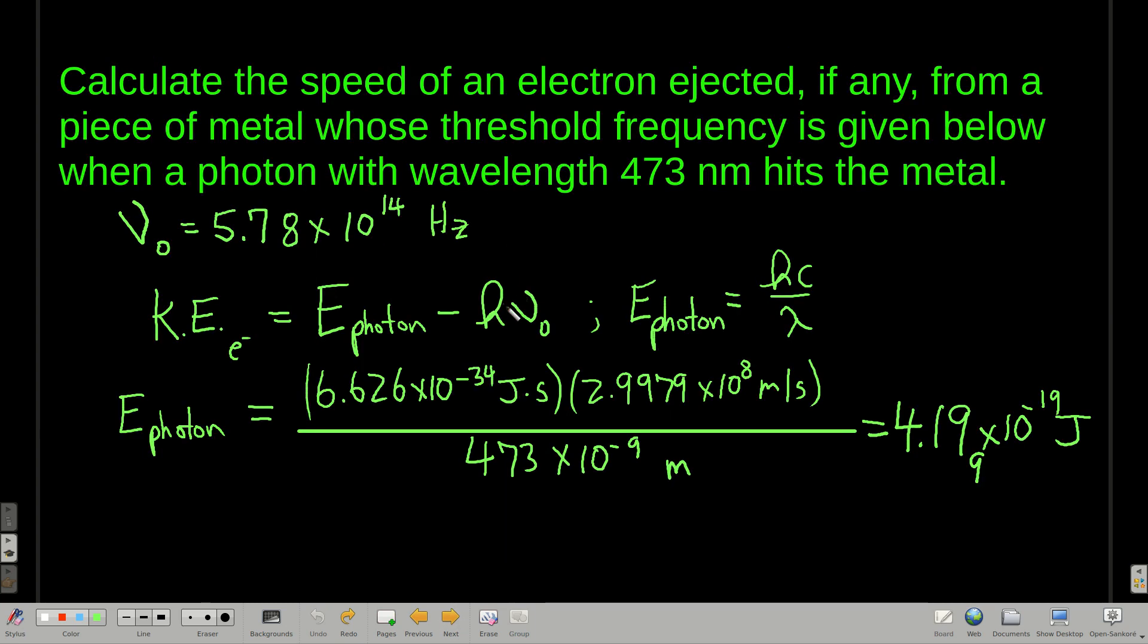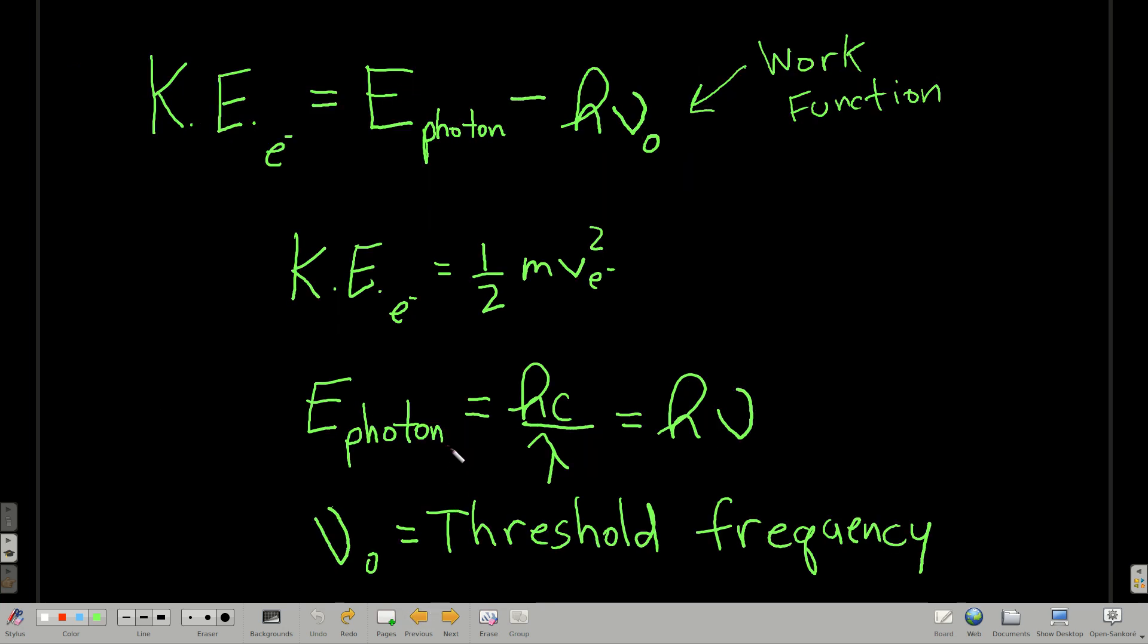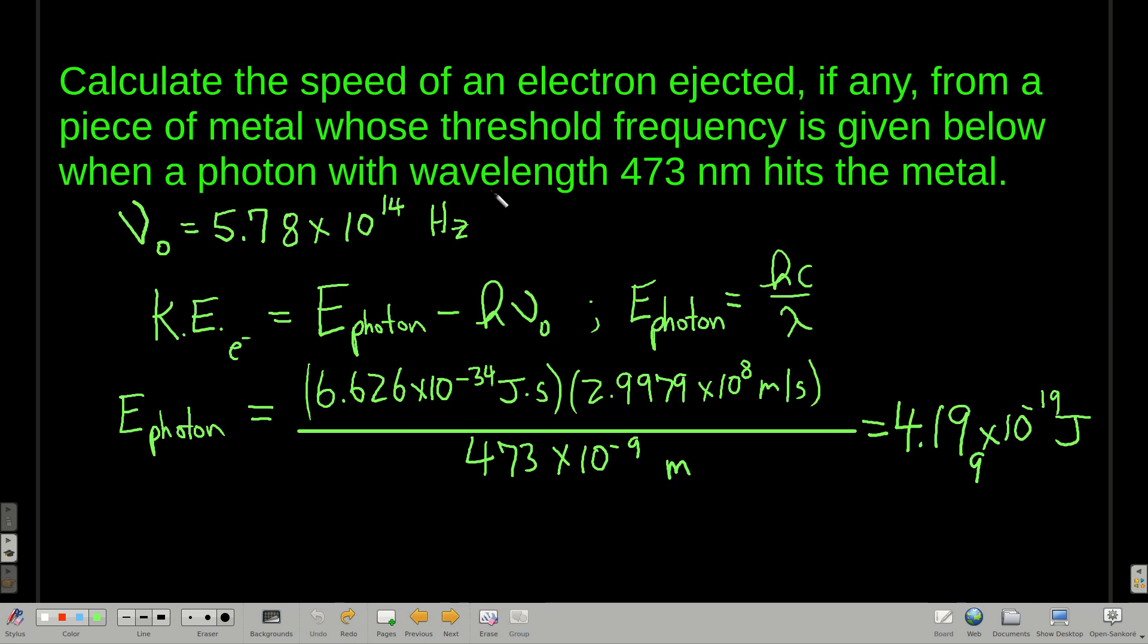So let's do an example. So we're going to calculate the speed of an electron that's ejected, if any. So in other words, if the energy of the photon that's hitting the metal in this example is below the work function, then no electron is ejected, right? So let's look back here for a second. So if you're just plugging into here and you get a negative kinetic energy, that doesn't make sense. And what that means is that no electron was ejected.